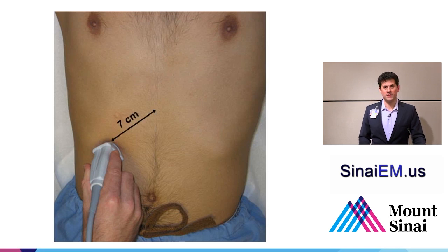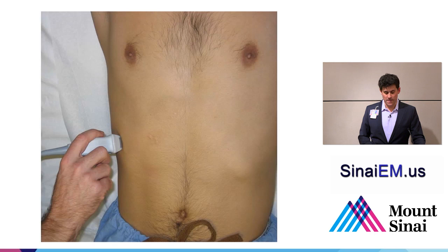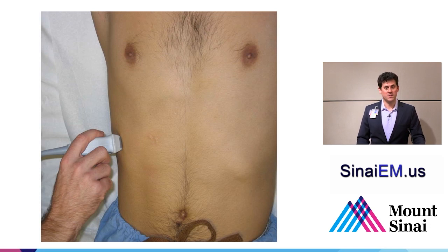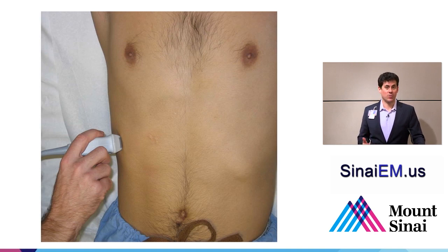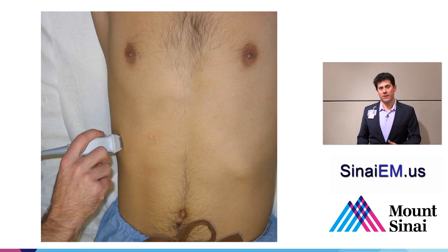The gallbladder is going to be found about 7 centimeters from the xiphoid process — "X minus 7," as some in the ultrasound community say. Start with the probe there. You can also start in between the ribs, especially if a patient is heavier or has a lot of bowel gas. Instead of imaging directly into the gallbladder, use the liver as a window. If you can't find the gallbladder right away, I usually give up, move towards looking for the liver, and then find the gallbladder from there.